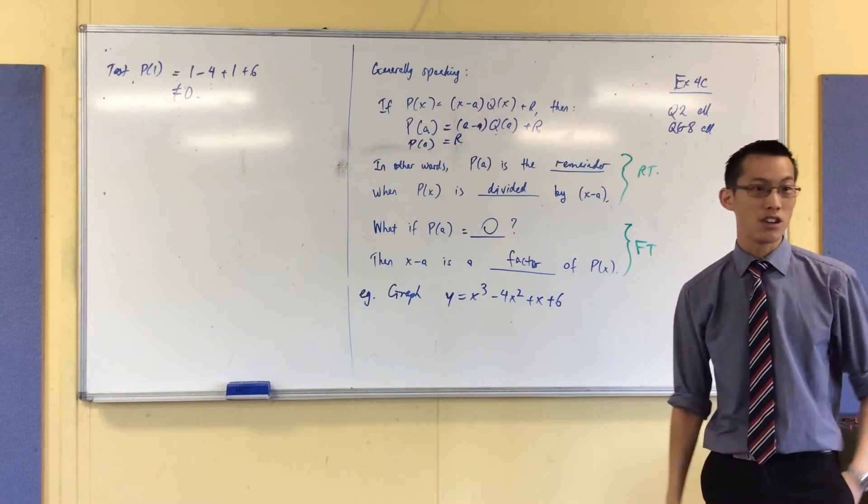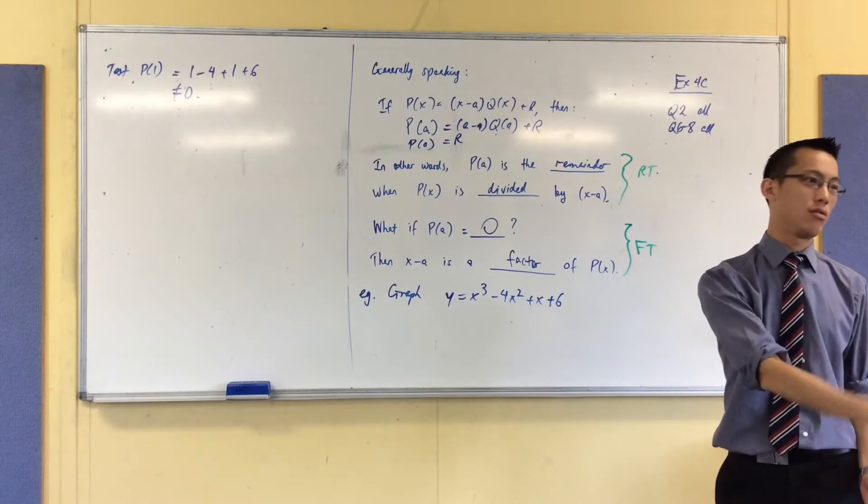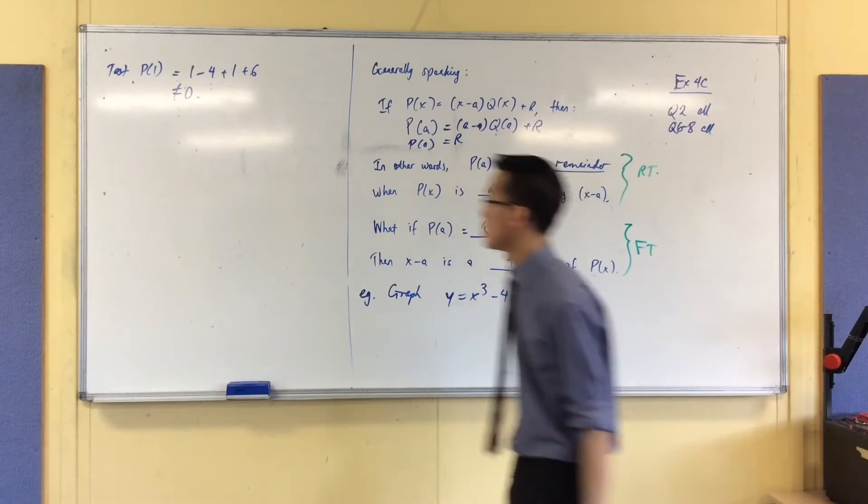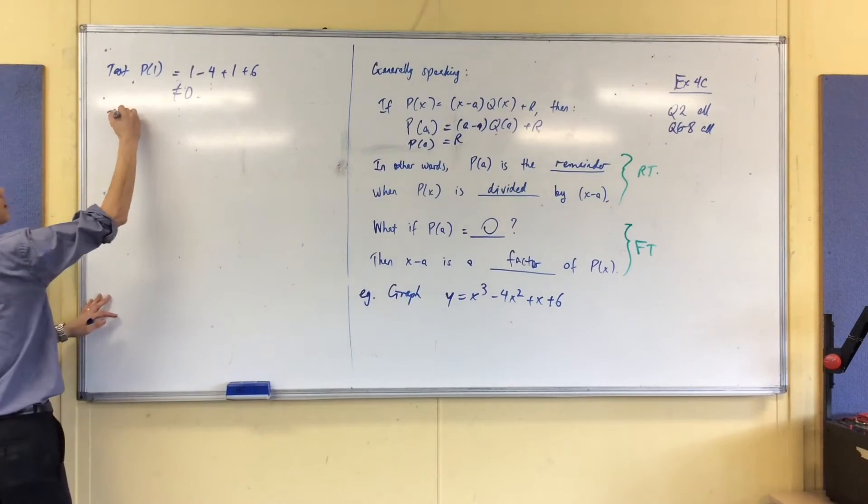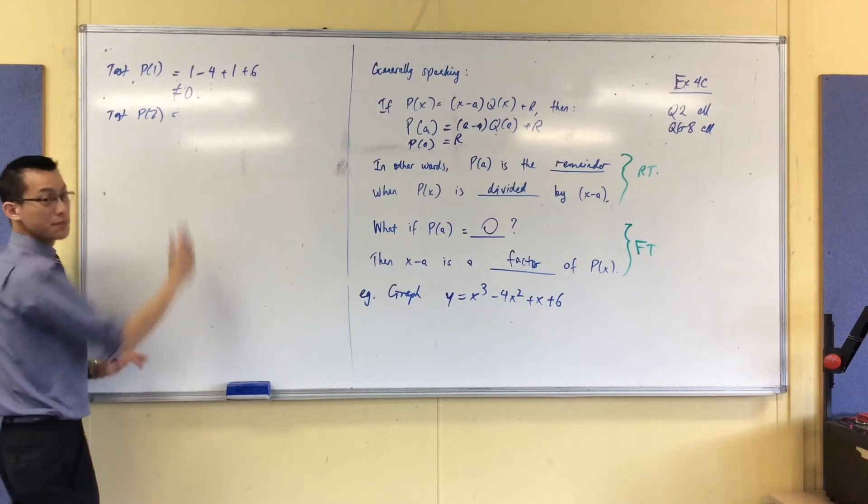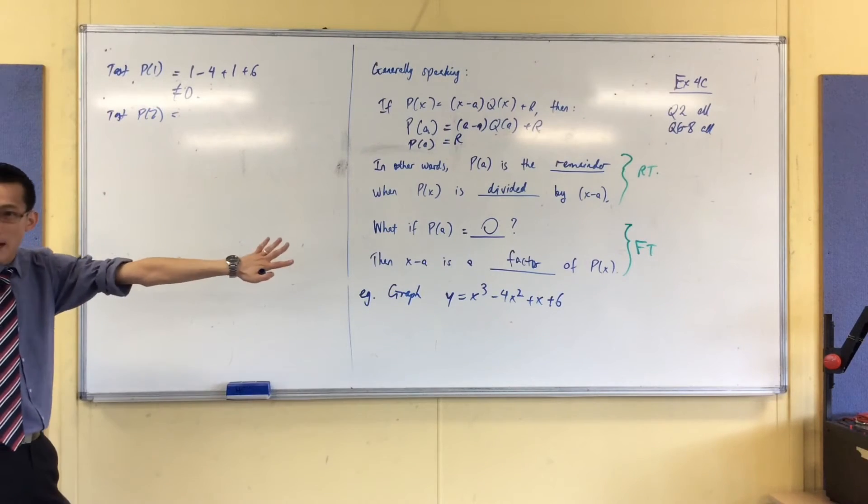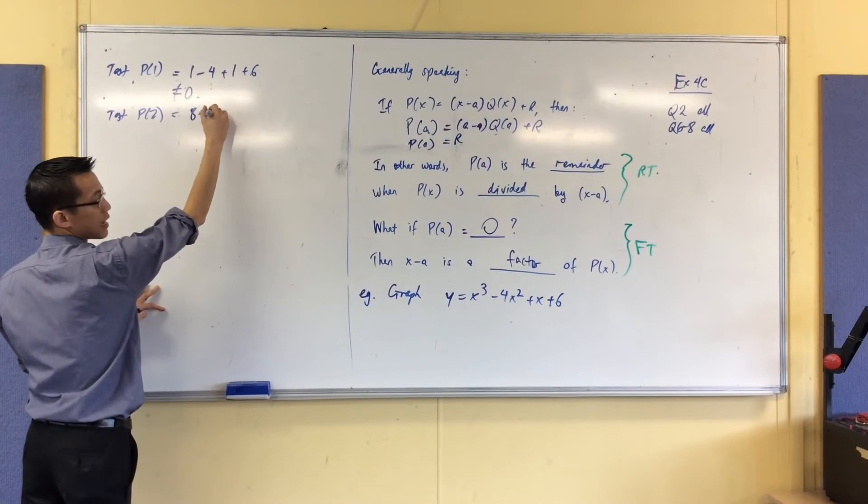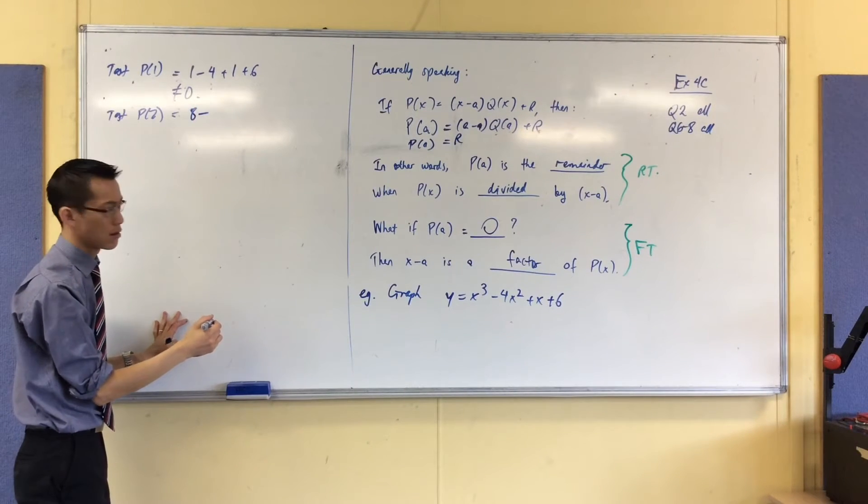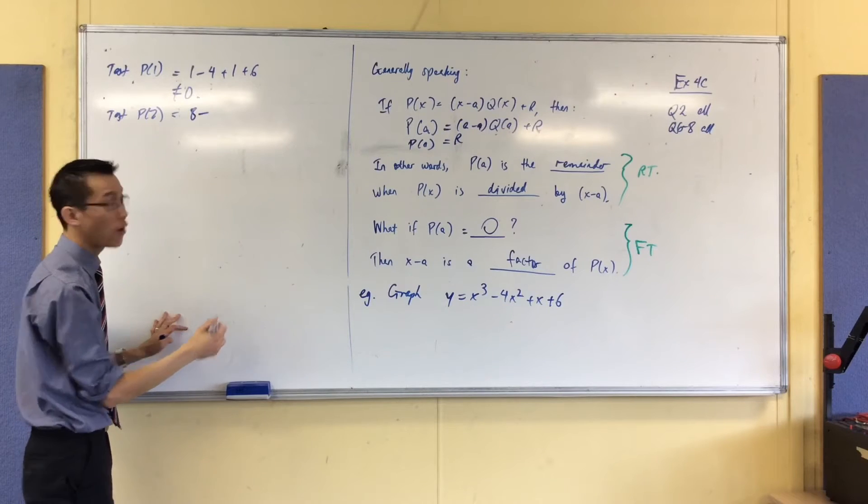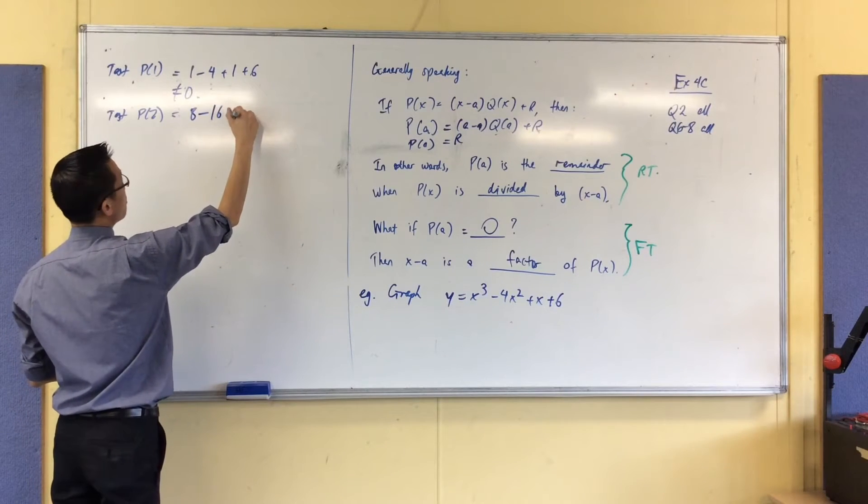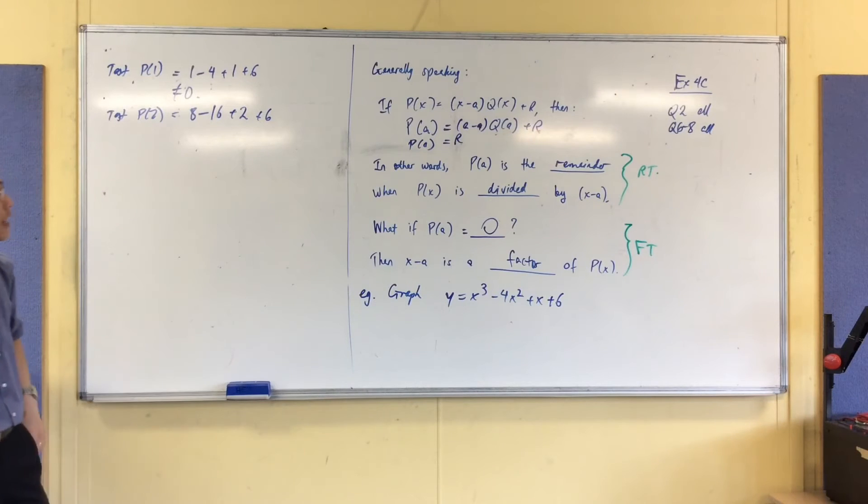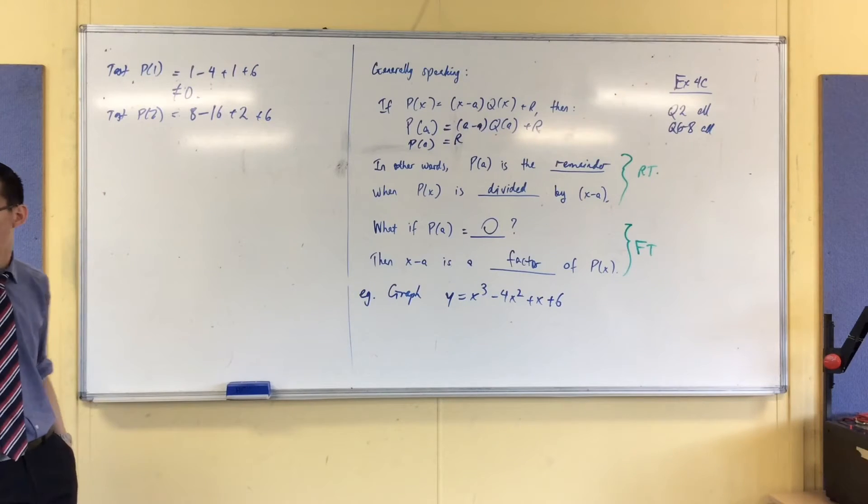I've tested 1. You have two choices for me. I can test 1, 2, 3. Those are pretty common values to test. So, I'm going to test P(2). And again, this is a bit harder, but it's not impossible. I'm going to get, let's see, 8 take away 4 times 4, which is 16 plus 2 plus 6.